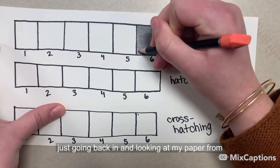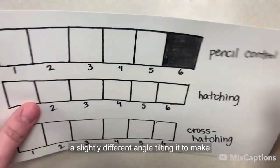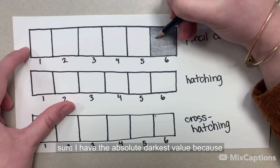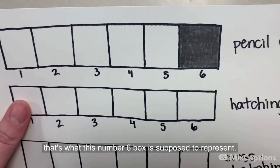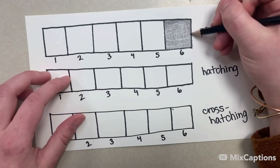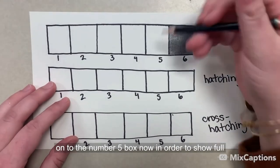So I'm just going back in and looking at my paper from a slightly different angle, tilting it to make sure I have the absolute darkest value. Because that's what this number six box is supposed to represent. And now that I'm finishing this up, I can move on to the number five box.